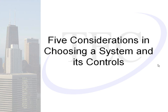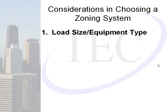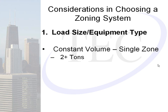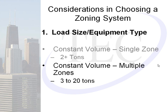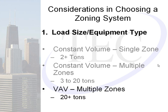When considering which of the three systems you want to install or design, there are five considerations. The first is load size or equipment type. Constant volume would typically be used in any application that only requires a single zone of temperature control, from two tons on up. Constant volume multiple zones is typically used between three and twenty tons. VAV multiple zones would typically be used anywhere from twenty tons and up.